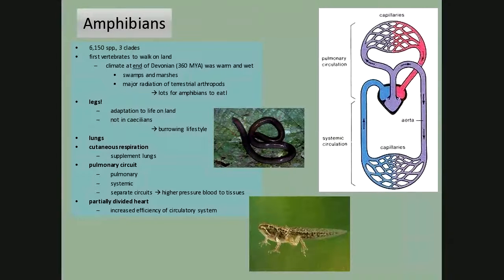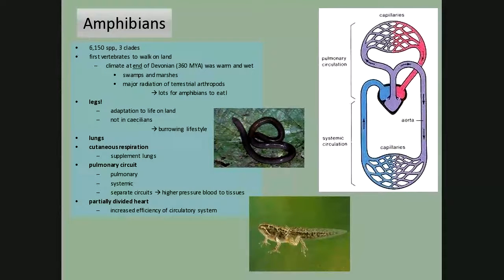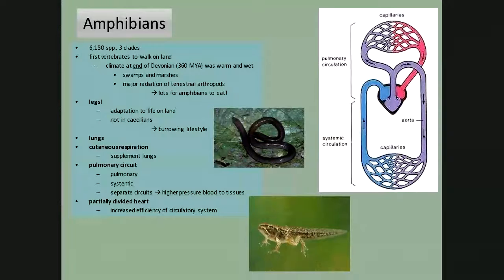The Carboniferous — remember why they called it that? Carbon, carbon, carbon — there were plants everywhere, and that's the stuff that made coal. As we moved out of the Devonian into the Carboniferous, 360 million years ago, we're getting a gradually warming, wet climate with swamps and marshes. Terrestrial arthropods were moving out into this very conducive, not-too-dry environment, and those arthropods would have provided lots of food for amphibians. Being able to move into wet terrain near water fits very well with their lifestyle.